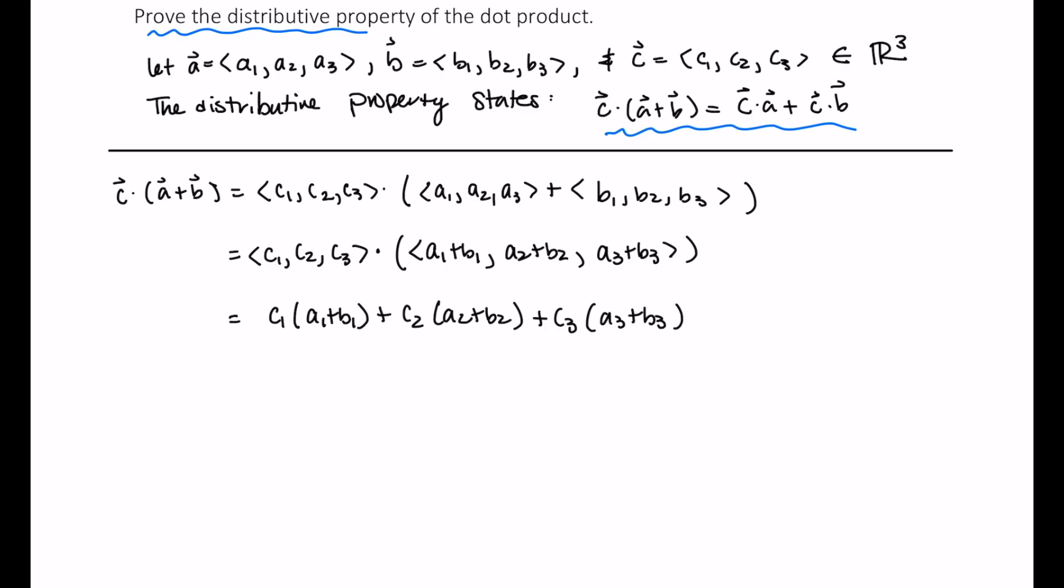Well, all of these values, all the A's, B's, C's, these are all real numbers. That is, they're all scalars, and the distributive property holds for scalars. So this becomes C1A1 plus C1B1, plus C2A2, plus C2B2, plus C3A3, plus C3B3. And let me just make that really clear here, that the distributive property holds for scalars.